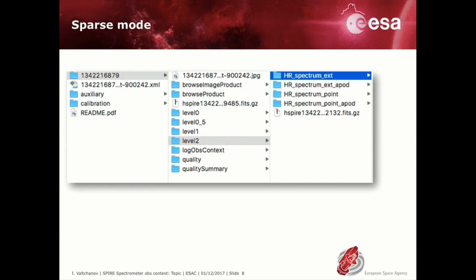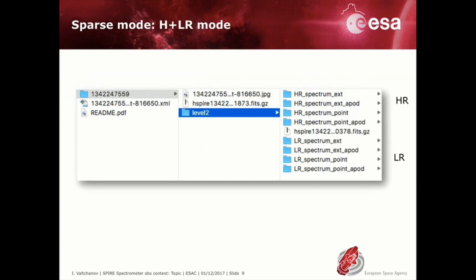For sparse mode we have the spectra for each of the two calibration schemes point or extended. Each spectrum also has a smooth version via apodization in Fourier space. If the observation was taken in high plus low resolution mode then there will also be spectra for both spectral resolutions.